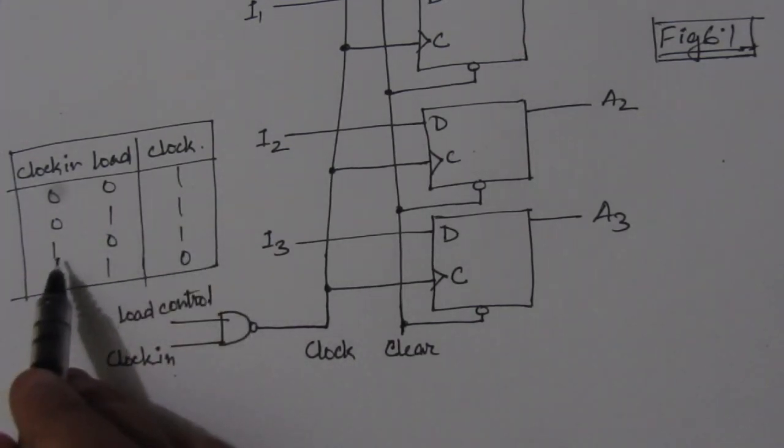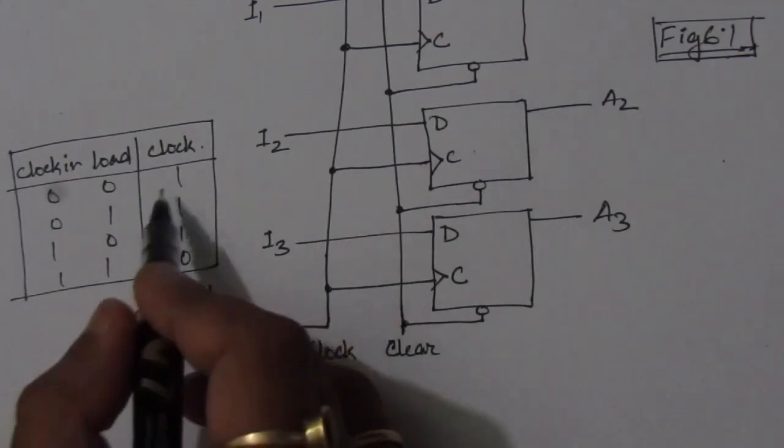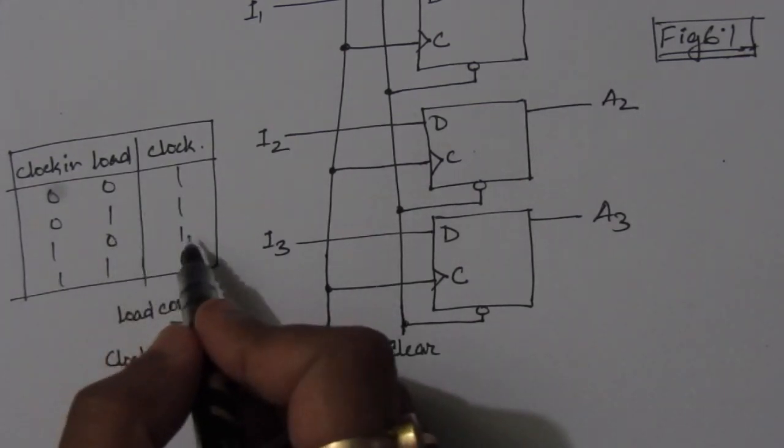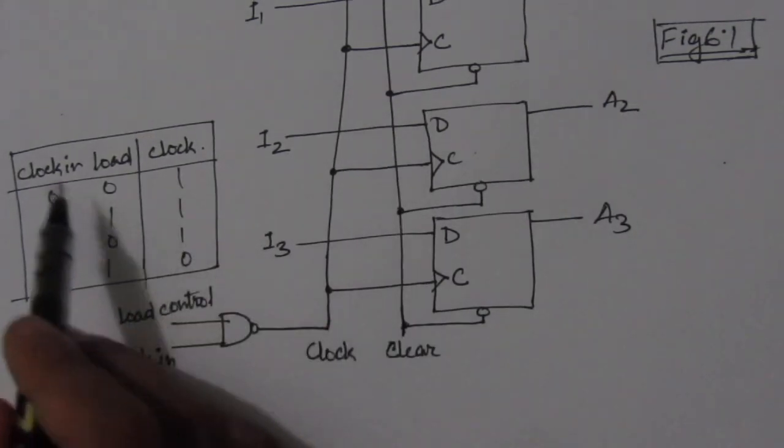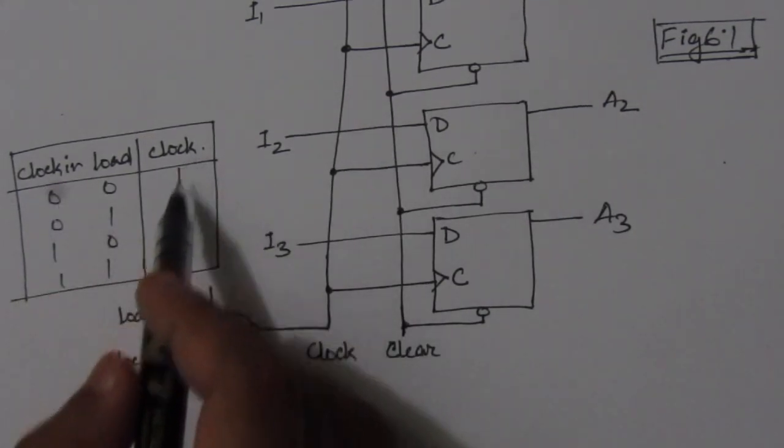Next we have input clock is 1 and the load is 0, it will remain in the same state. Now this clock_in is modified like this one.